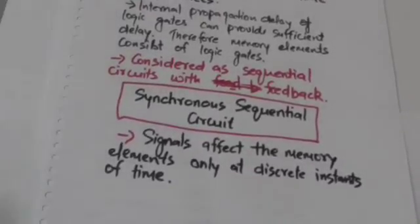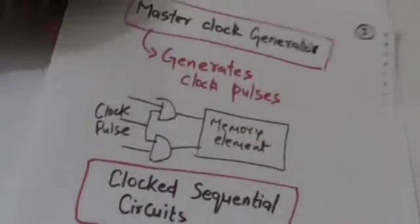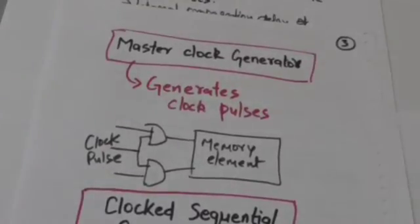Now, synchronous sequential circuits. In synchronous sequential circuits, signals affect the memory elements only at discrete instants of time. Synchronization is achieved by a device called master clock generator which generates a periodic train of clock pulses.